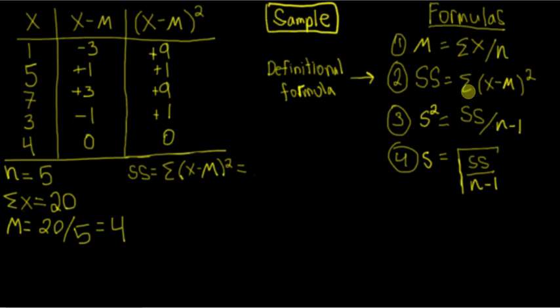So all we want to do then is sum up each of these values. So we have nine plus one plus nine plus one plus zero, giving us a sum of squares of 20.